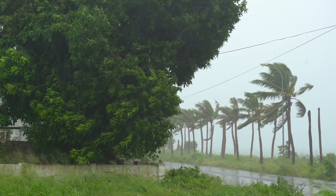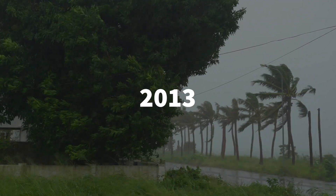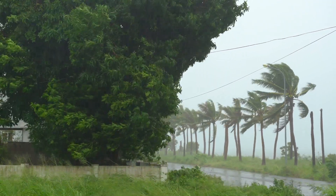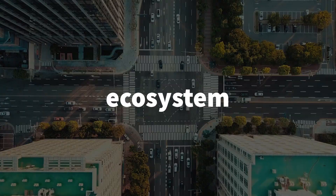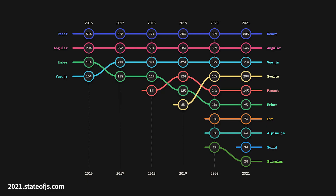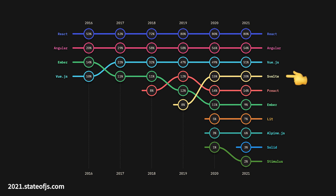React took the world by storm back in 2013, and now, almost 10 years later, has a complete ecosystem around it and constantly ranks first in almost all dev surveys. While other big players in the space like Angular or Vue have a decent share of the frontend market, and newer tools such as Svelte or Qwik are redefining the way we write code for the UI, I am arguing that it will be extremely difficult to replace React as the community favorite.